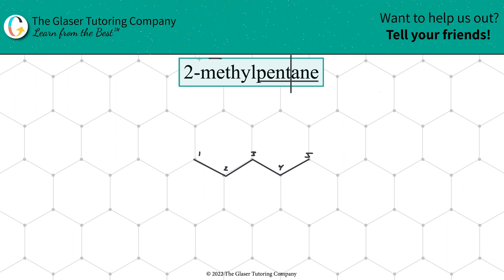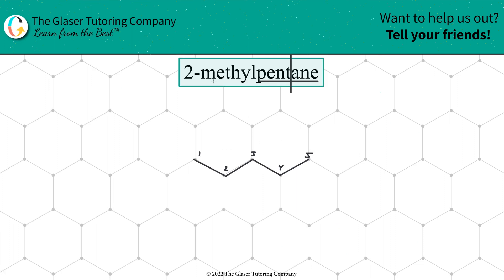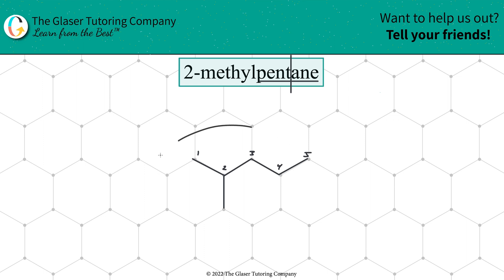Now we turn our attention to the '2-methyl' part. Methyl is a substituent, because of the ending 'yl' — methyl. 'Meth' represents one carbon, as shown in the table. By the way, take a look in the description below — I'll leave you this table as well as a link for this drawing tool. On carbon number two of the parent chain, we have a one-carbon substituent. So go to your parent chain, go to carbon number two, and draw in one additional carbon. And there you go — that's it. That's 2-methylpentane.